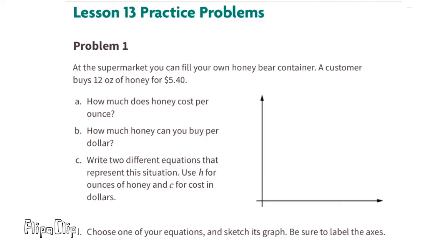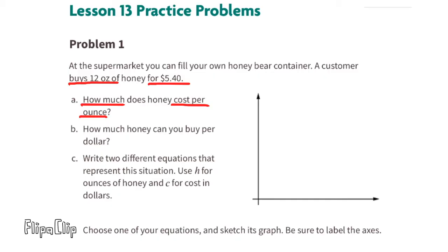Seventh grade, Unit 2, Lesson 13: Two Graphs for Each Relationship. Problem number one: at the supermarket, you can fill your own honey bear container. A customer buys 12 ounces of honey for $5.40. Part A: how much does honey cost per ounce?